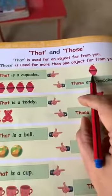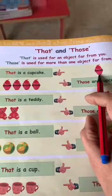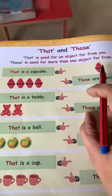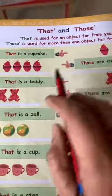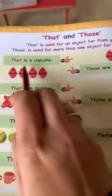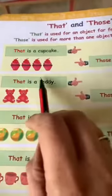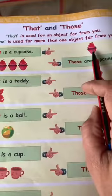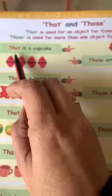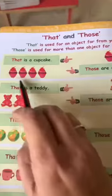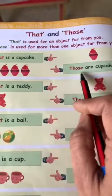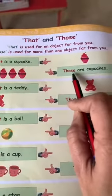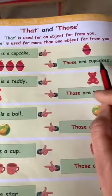For example, ye cupcake bhoat door pada hai. Which sentence we will say? We will say that is a cupcake. Now, these cupcakes are more than one — they are many. This is one; for one thing we use that. And for many objects we use those. So which sentence we will make? We will write: those are cupcakes.